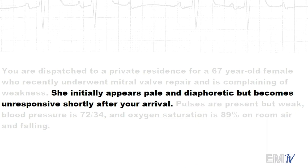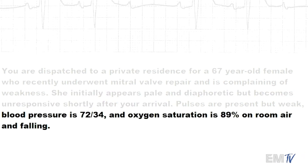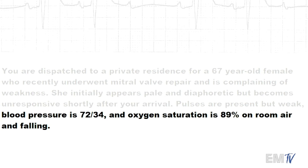The first highlighted text: the patient is pale and diaphoretic but becomes unresponsive. Unresponsiveness is a form of altered mental status — this patient is unstable by default. Blood pressure is 72 over 34, which makes her hypotensive, and oxygen saturation is 89% on room air, so this patient is also dyspneic.